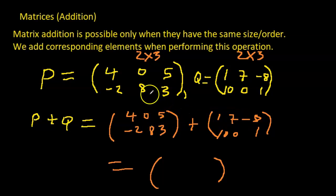So we add the elements that correspond. So we add, well normally we try and give it a little more space if you're trying it at home. Alright, so 4 corresponds with 1, so 4 plus 1, that's 5. 0 corresponds with 7, so 0 plus 7, that's 7.